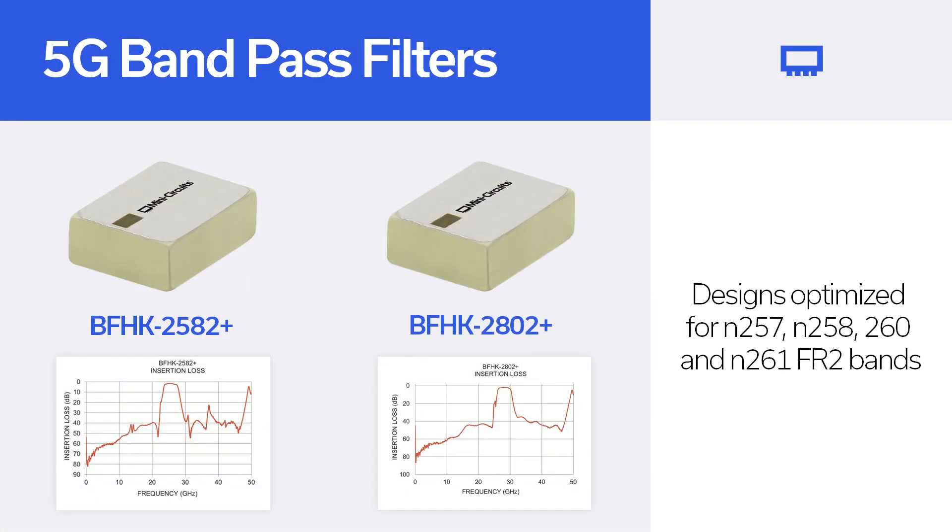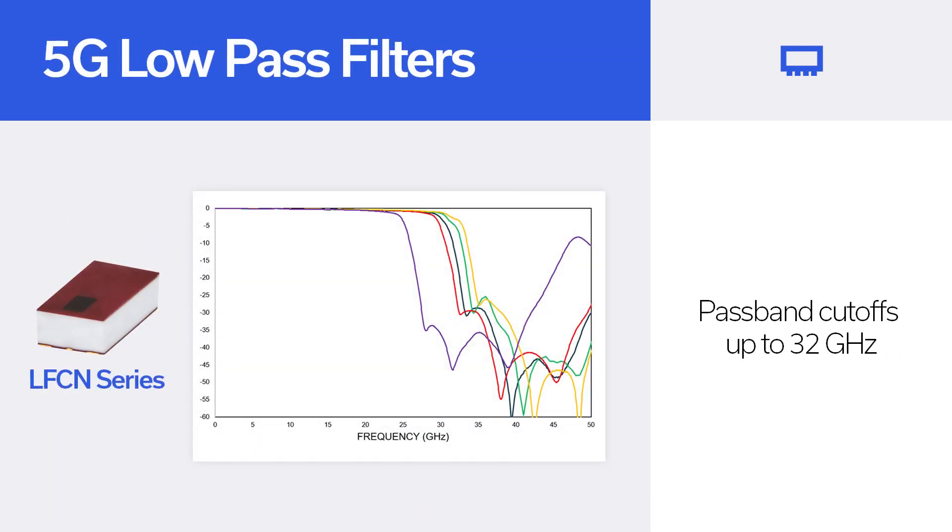For example, we've recently released the bandpass filter BFHK-2582-plus and BFHK-2802-plus for the 5G N257 and N258 band, as well as LFCN and LFCV series of millimeter wave low pass filters.